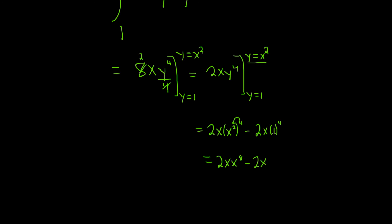Minus 2x, right? Because 1 to the fourth is 1. There's a 1 here, so you add the exponents. So it's 2x to the 9 minus 2x.